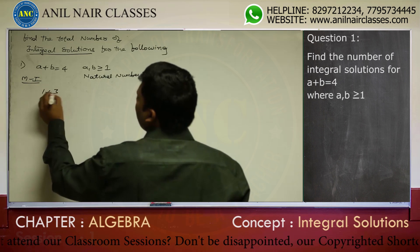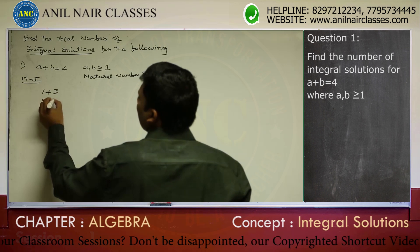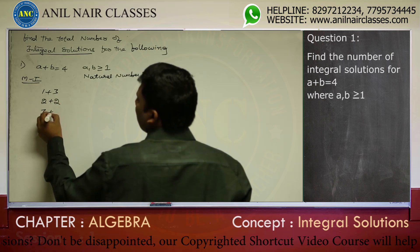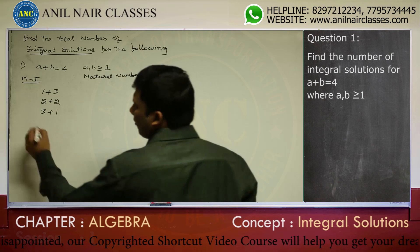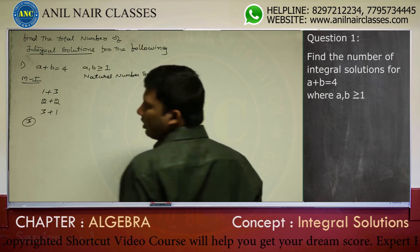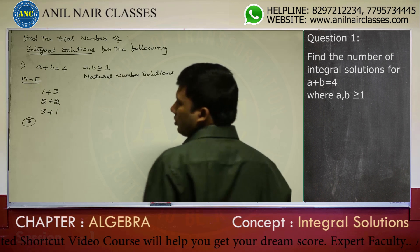1 plus 3 equals 4, 2 plus 2 equals 4, 3 plus 1 equals 4. The total count is 3 natural number solutions.